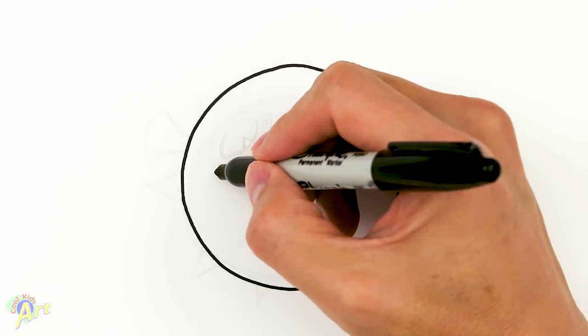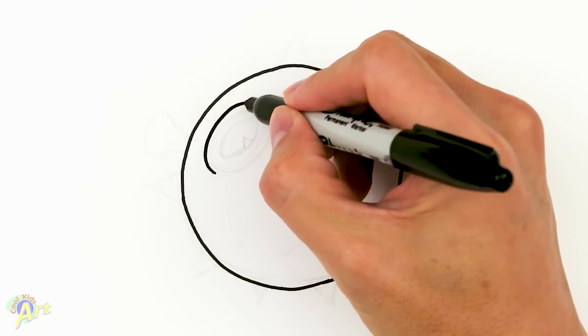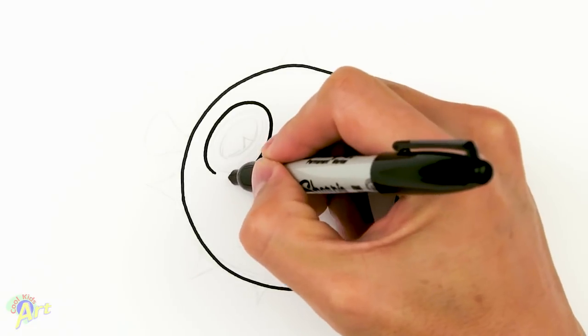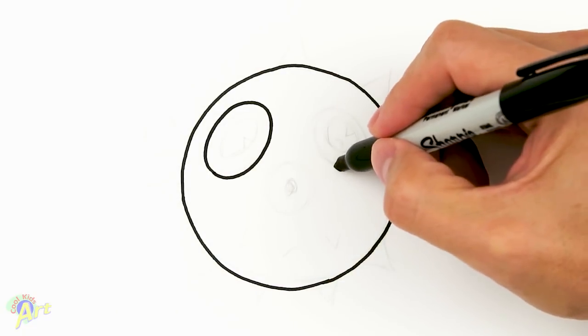So in here, just draw one big oval, and then on the other side as well.